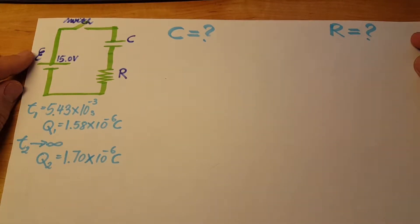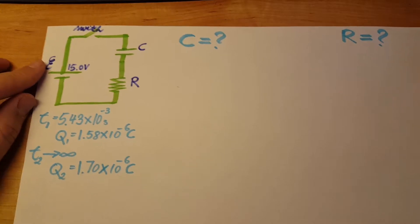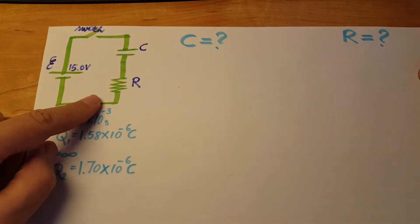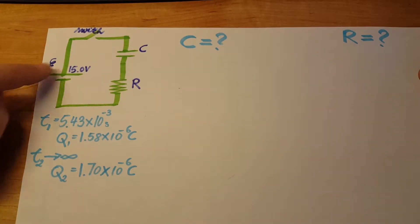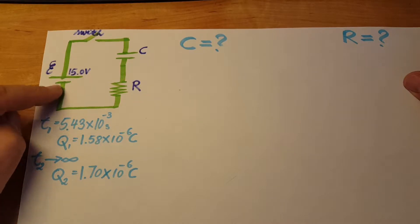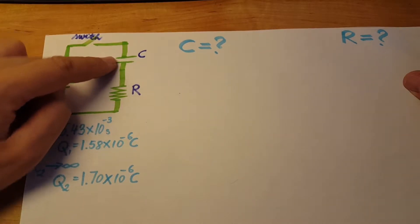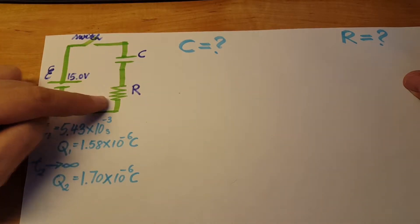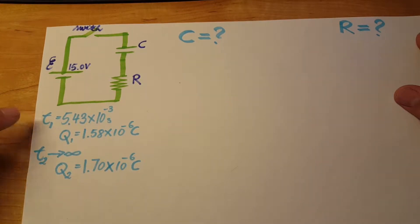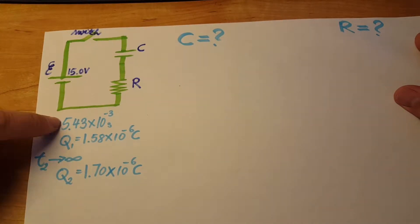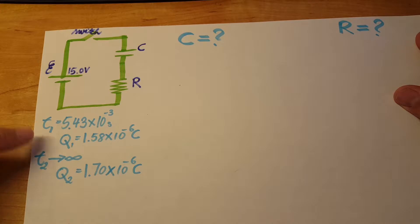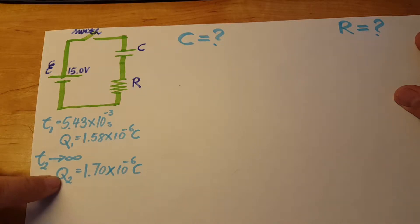This is an RC circuit problem. We have a circuit with a given EMF of 15 volts in series with a capacitor and a resistance. What we know is that at time one, the capacitor has a charge of this much, and at a very long time, the capacitor has this much charge on it.